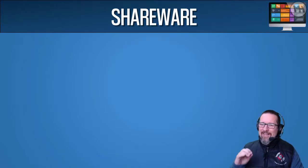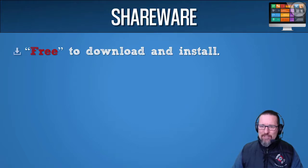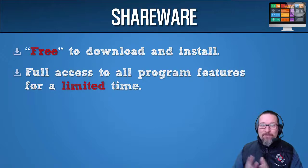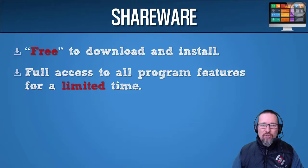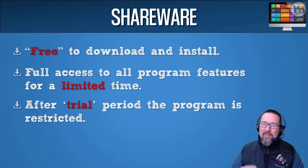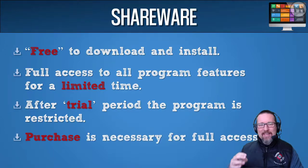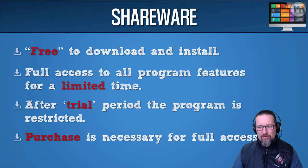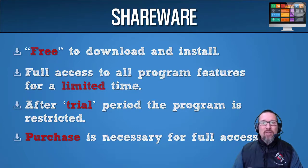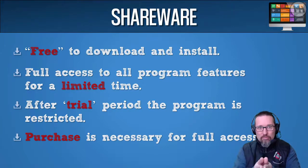Shareware is a little bit different. Shareware is free to download and install, and you have full access to the program for a limited time — like a week, two weeks, or 30 days. After that trial period, you have to buy the program. They give you full access for a month, then they take away the features, and you either buy the program or a license to use it.